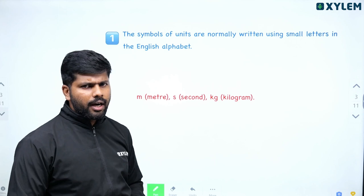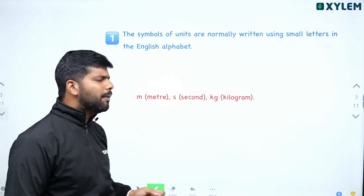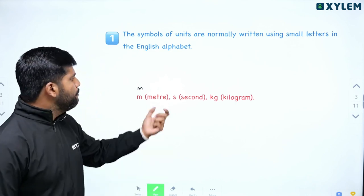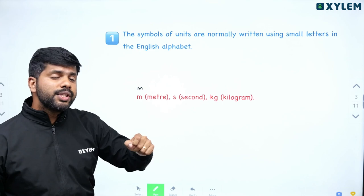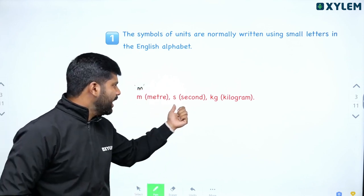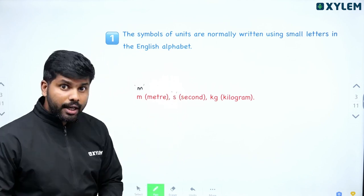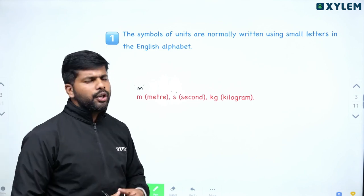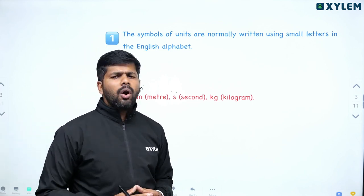The first rule: normally when we use units, we use small letters. If we write meter, we use the symbol small letter 'm'. If we use second, we use small letter 's'. Normally, we use small letters to represent units.